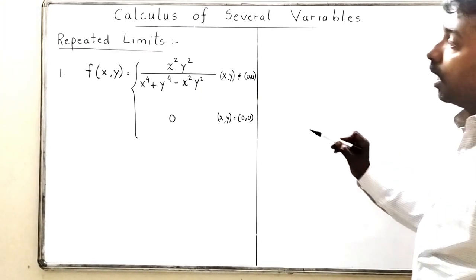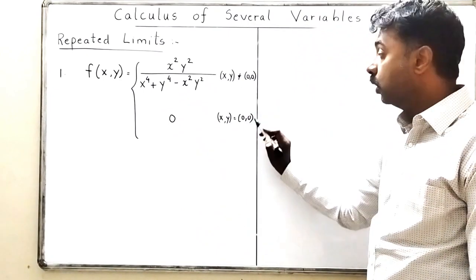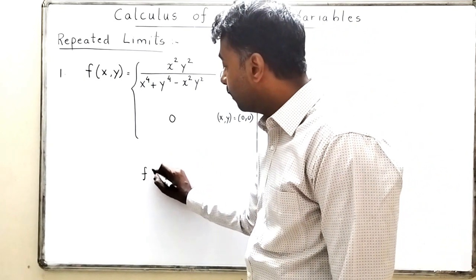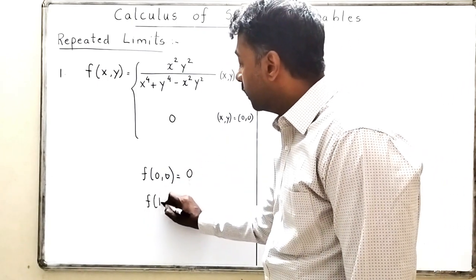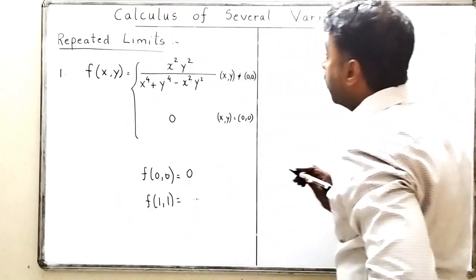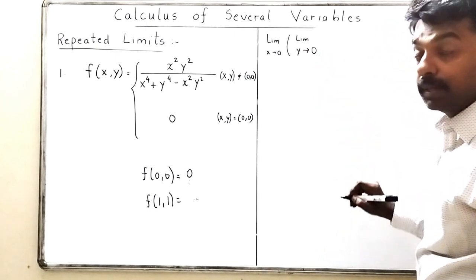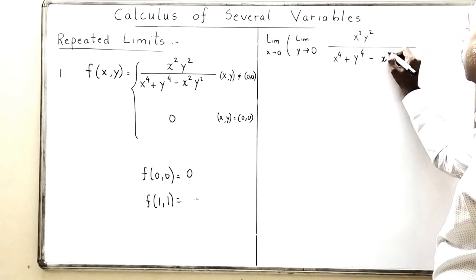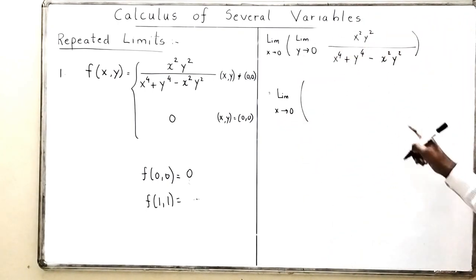Now for Problem 2: f(x,y) = x²y²/(x⁴ + y⁴ - x²y²) when x and y are not zero, and f(0,0) = 0. We find the repeated limits. For lim(x→0)[lim(y→0) f], put y = 0 in the inner limit. The numerator becomes x²·0 = 0, and the denominator becomes x⁴. So the fraction is 0/x⁴ = 0.